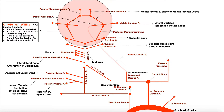The subclavian artery traverses laterally on either side, eventually passing underneath the clavicle over the margin of the first rib, where it becomes the axillary artery. But before that happens, it gives off several branches, one of which is the vertebral artery.